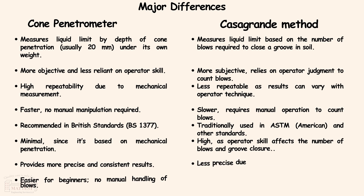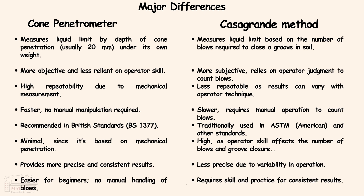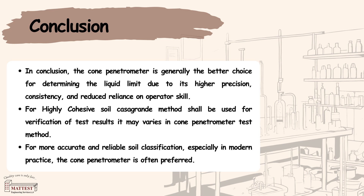There are some major differences between these two methods listed below. In conclusion, the cone penetrometer is generally the better choice for determining liquid limit due to its higher precision and consistency, requiring less reliance on operator skill. For highly cohesive soils, the Casagrande method can be used to verify results, since results may vary in the cone penetrometer test. Overall, the cone penetrometer is preferred for accurate and reliable soil classification in modern practice.